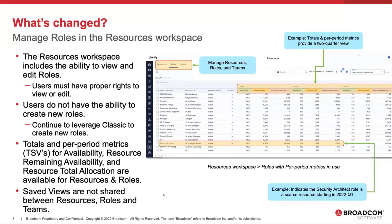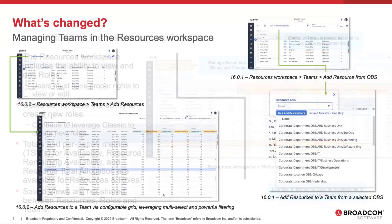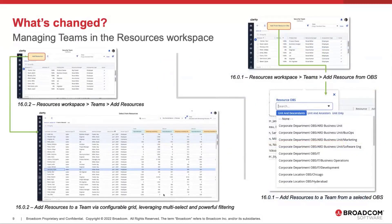One of the things you can see in this visual is totals showing per-period metrics for the next two quarters, and the security architect role goes negative starting in Q2. Right away, you start to see scarcity of your resources in a view like this. Teams is still there in this workspace. In the prior release, when adding resources you could do it one at a time through the plus button, or add from a resource OBS, which would bulk include all people from that OBS directly onto the team.